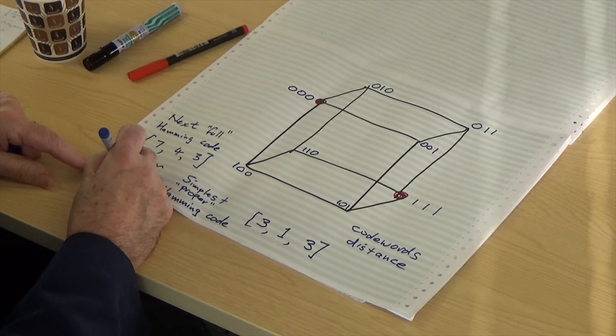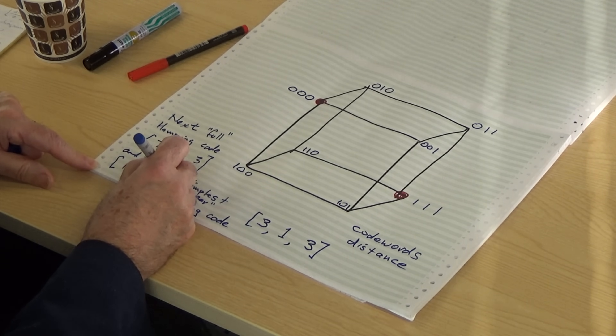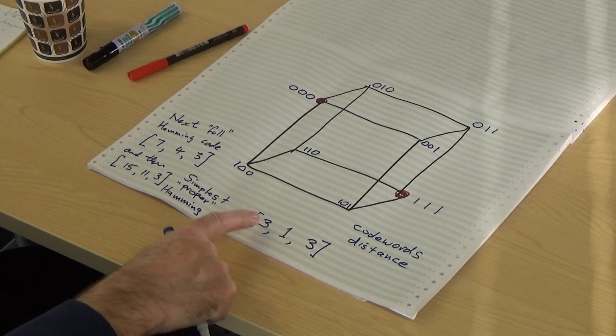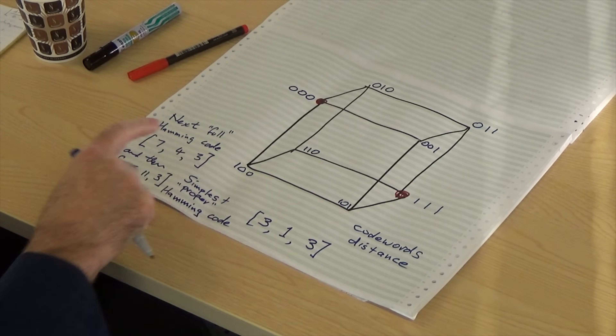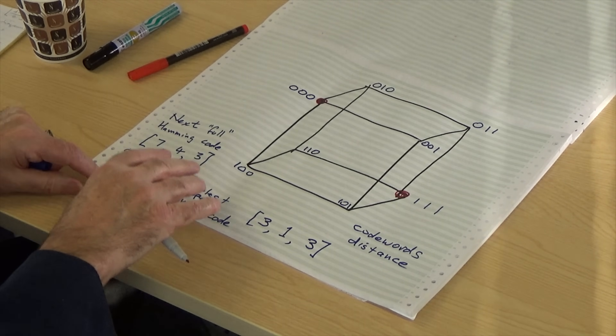The next one after this is 15-11-3. There is a pattern emerging here, particularly on that leading digit: 3, 7, 15 — always one less than a power of two. That's a necessary condition, together with distance three between code words, for these to be proper full Hamming codes.